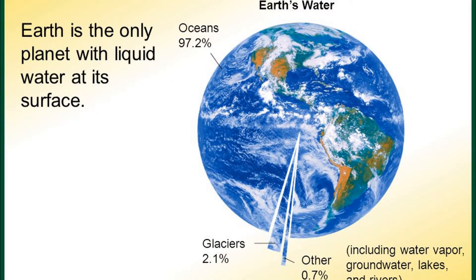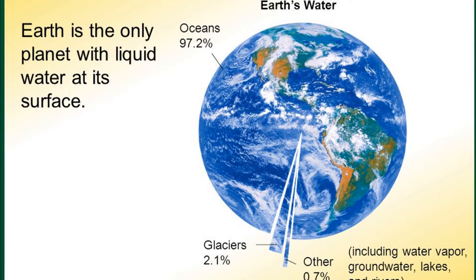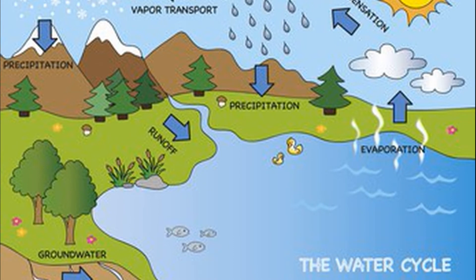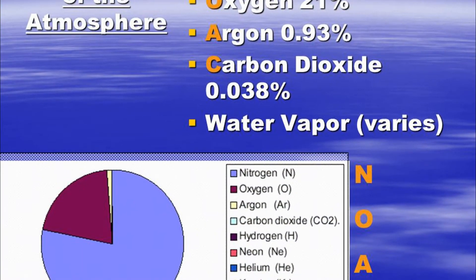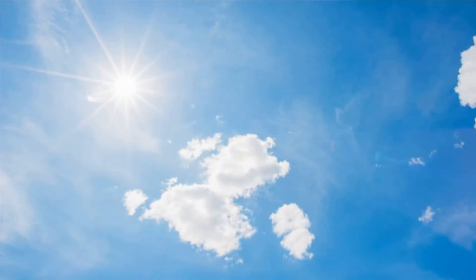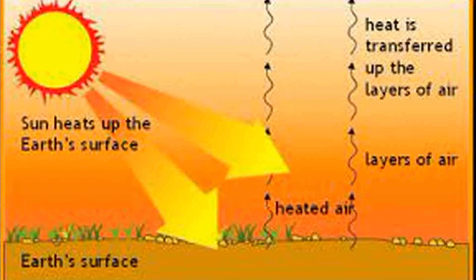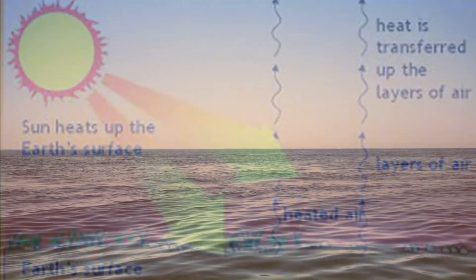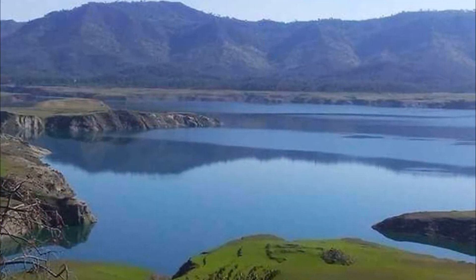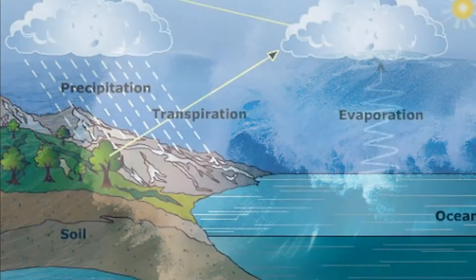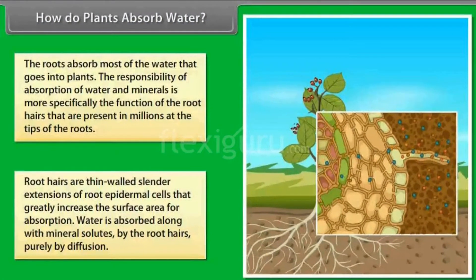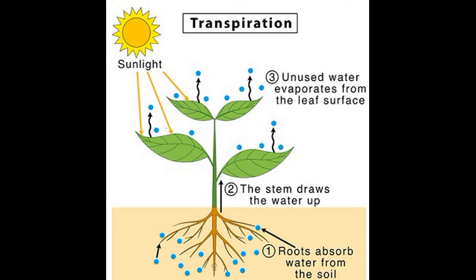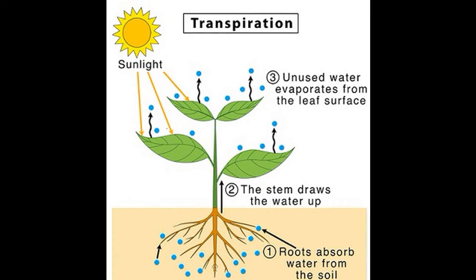The next cycle is the water cycle. The circulation of water from the surface of the earth to the atmosphere and back to the earth is called the water cycle. Nearly three quarters of the earth's surface is covered with water. During the day, the sun heats up the earth's surface. As a result, water from large water surfaces like lakes, rivers, and oceans evaporates as water vapor. Plants absorb water from the soil, and the excess water is given off from the aerial parts of the plant in the form of water vapor during transpiration.